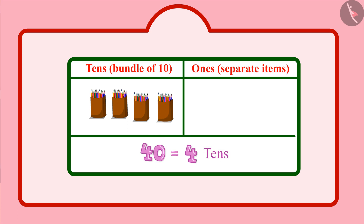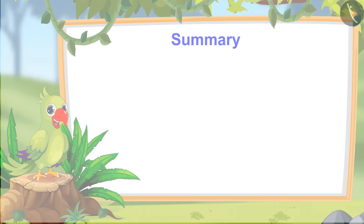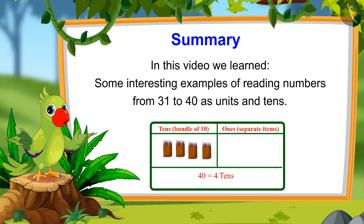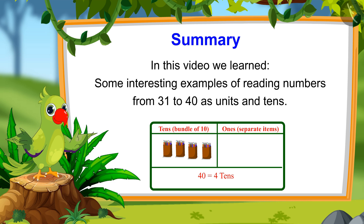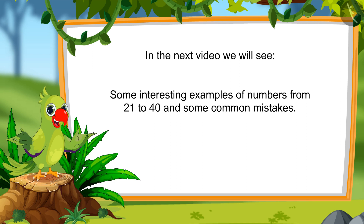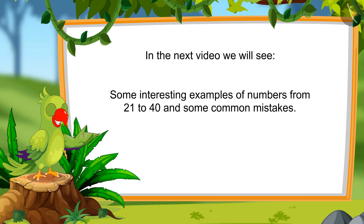Yes Chotu, there are only 4 tens in 40 and 0 units. So children, that was all for today. In this video we saw numbers from 21 to 40 and some interesting examples of reading those numbers as units and tens. In the next video we will see some interesting examples of numbers from 21 to 40 and learn about some common mistakes which should not be done. Till then, goodbye friends!